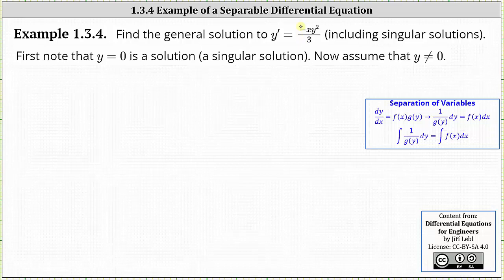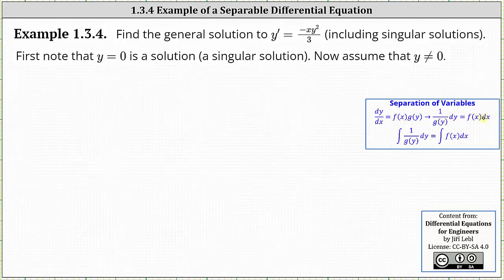Looking at our notes on the right, if we have an equation in the form dy/dx equals f of x times g of y, meaning on the right side we have a function of x times a function of y, we can use the technique of separation of variables where we write the equation with the y's on the left and the x's on the right, and then we integrate both sides of the equation.